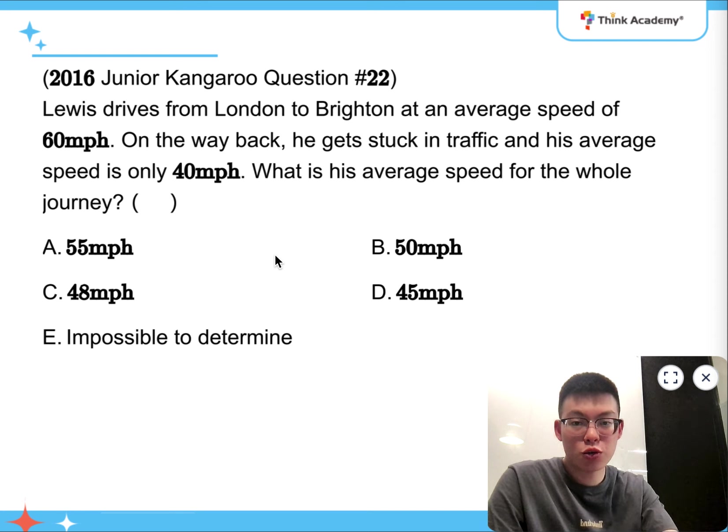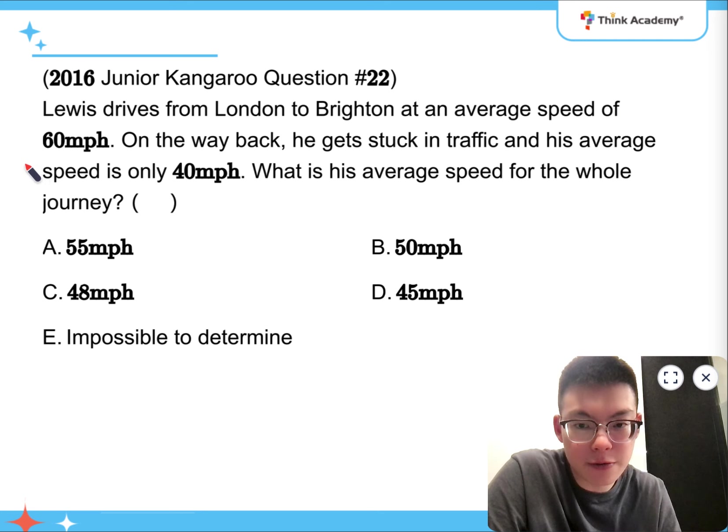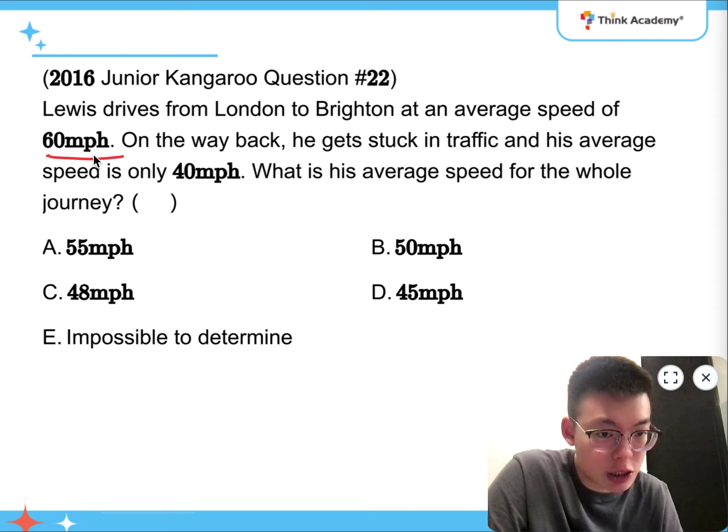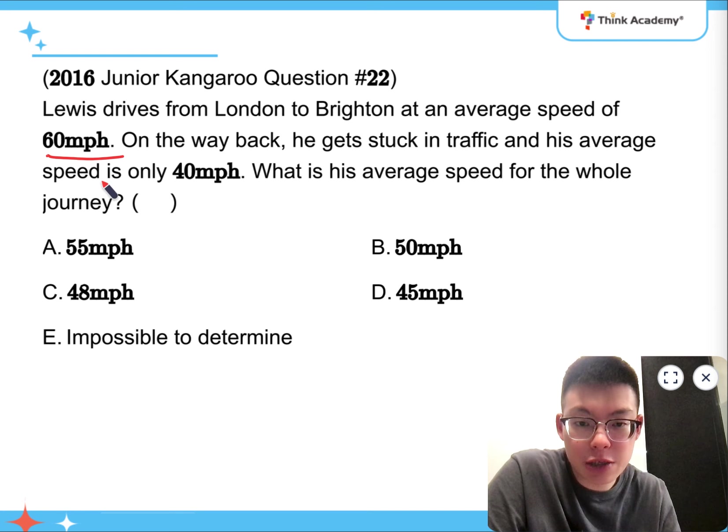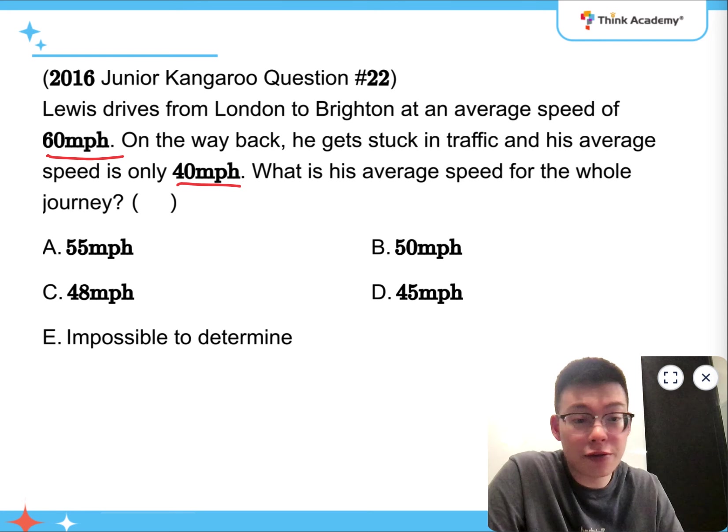And for question 22, Lewis drives from London to Brighton at an average speed of 60 miles per hour. On the way back, he gets stuck in traffic, and his average speed is only 40 miles per hour. What is his average speed for the whole journey? So that is a very subtle question.